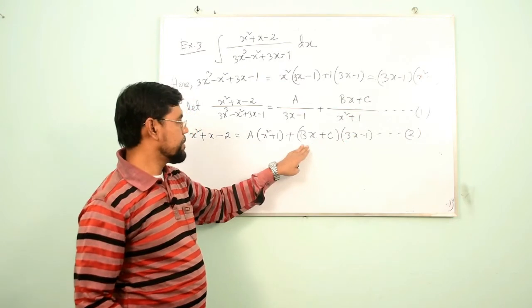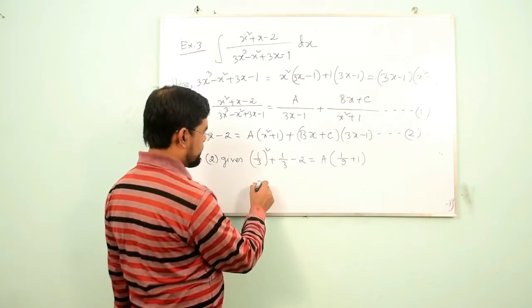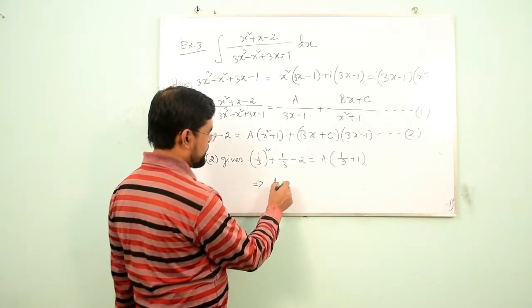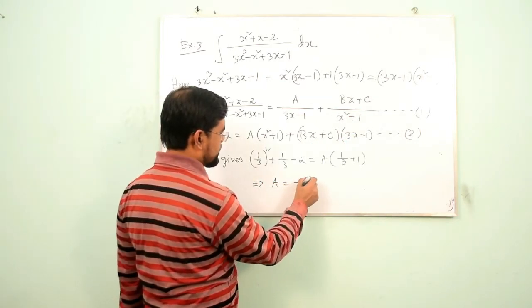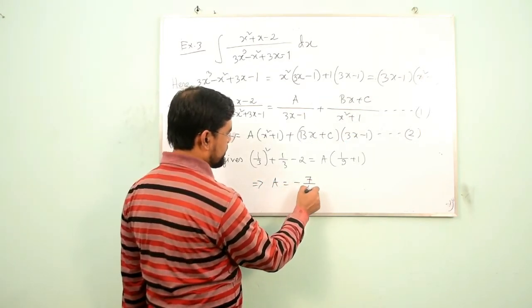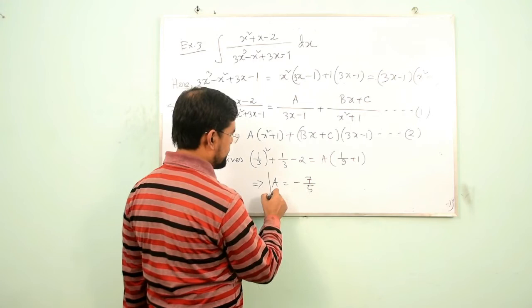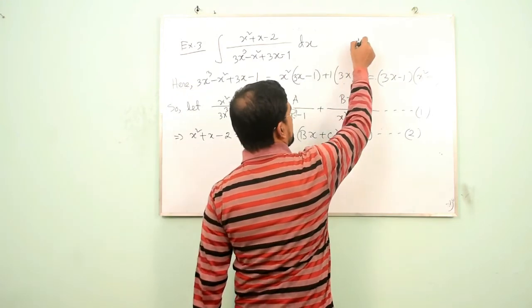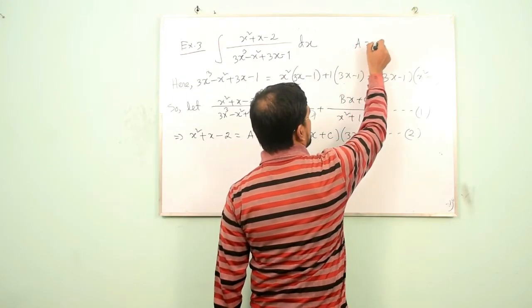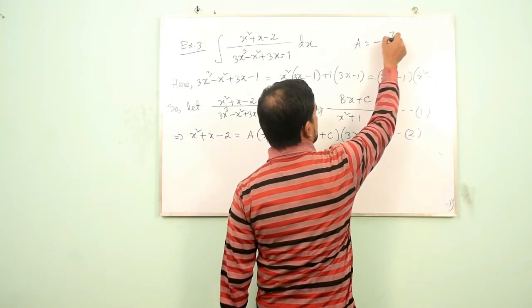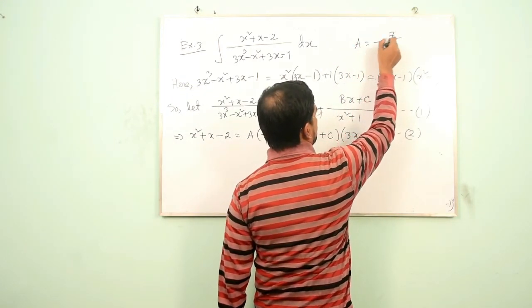Putting x = 1/3 makes the quadratic term zero, giving A = −7/5.